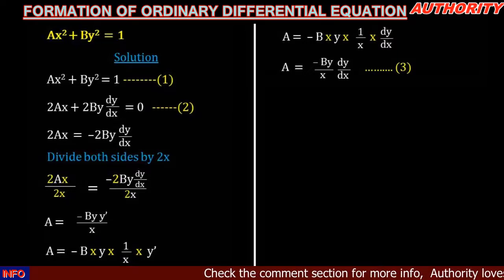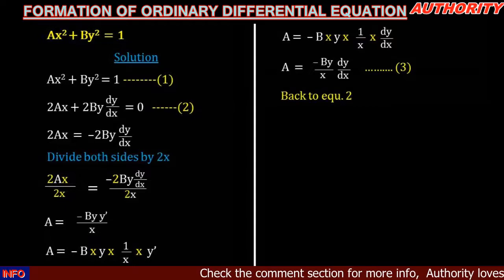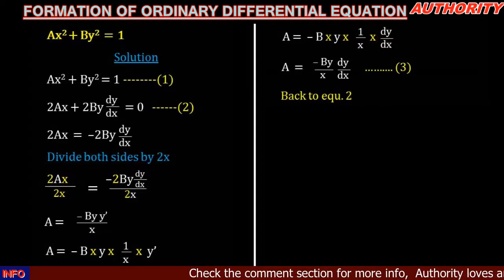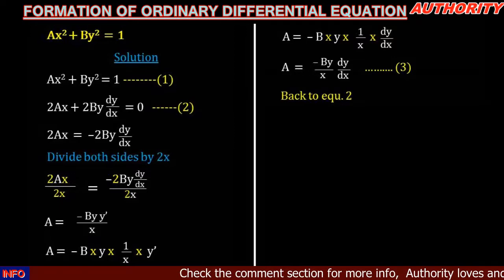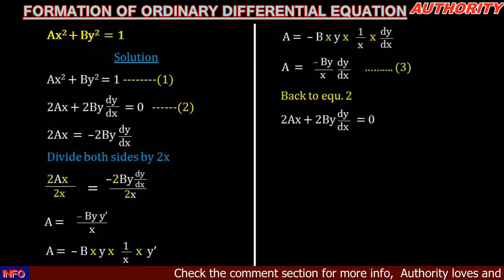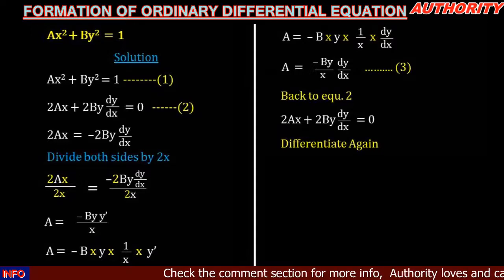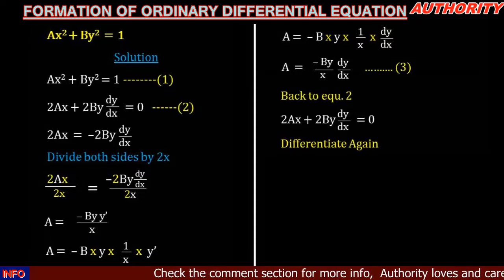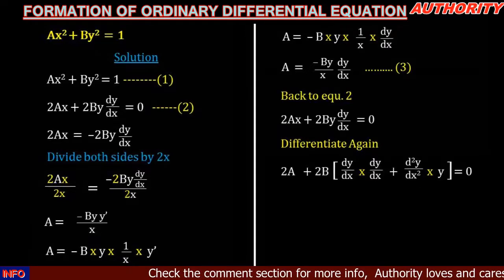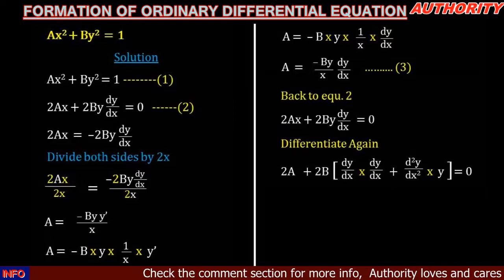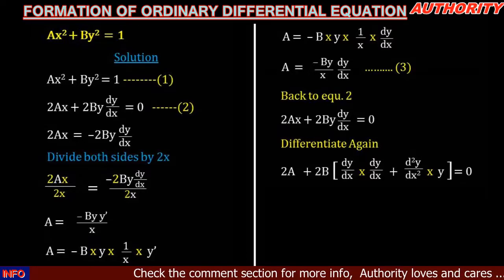Now let's go back to equation 2. We differentiated once and made 'a' the subject. Now we go back to equation 2 — which is 2ax + 2by·dy/dx = 0 — and differentiate for the second time, which is also the last time. When we differentiate 2ax we get 2a. For the second term, 2by·dy/dx, we treat 2b as a constant and open a bracket.